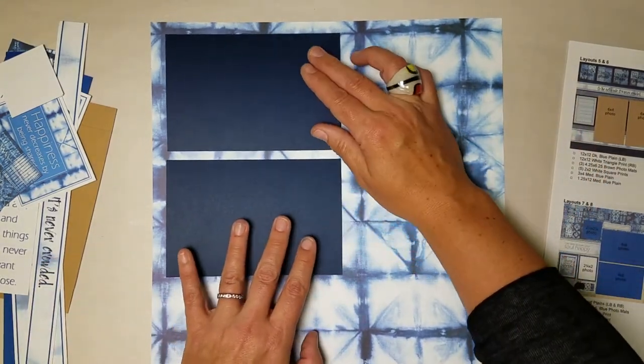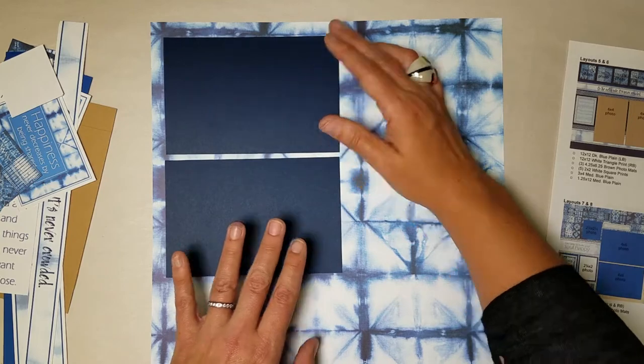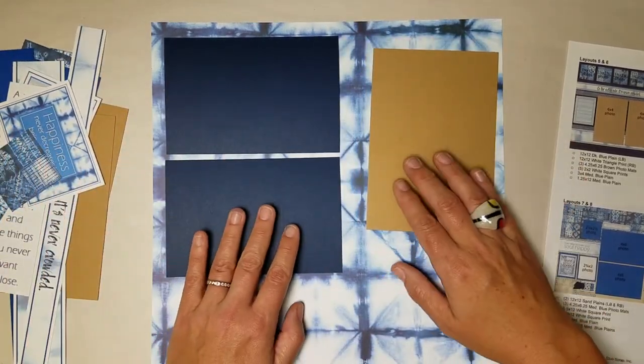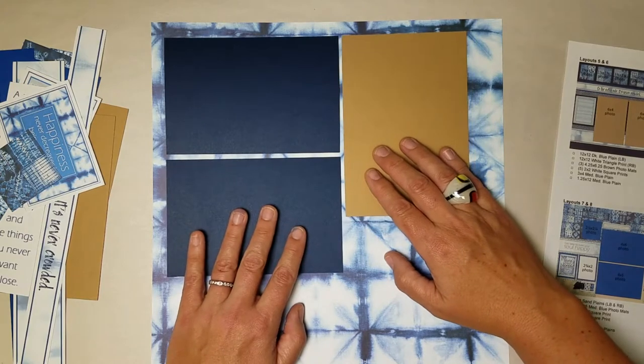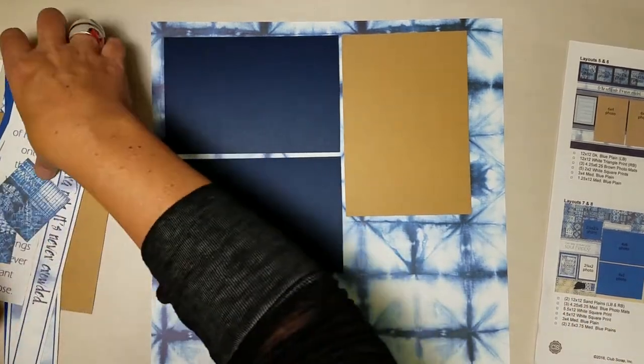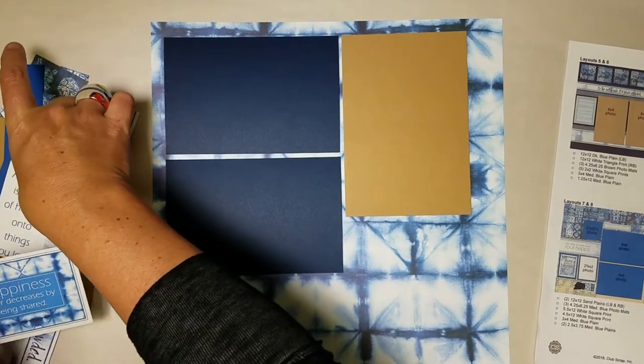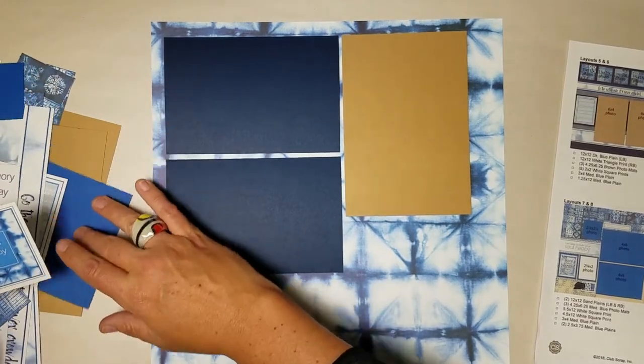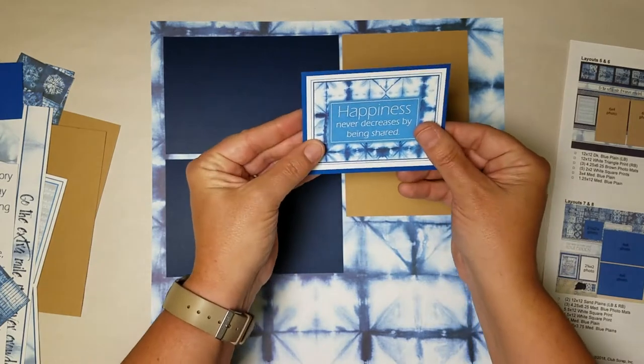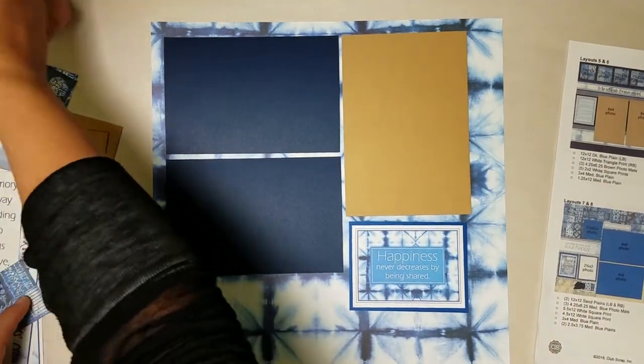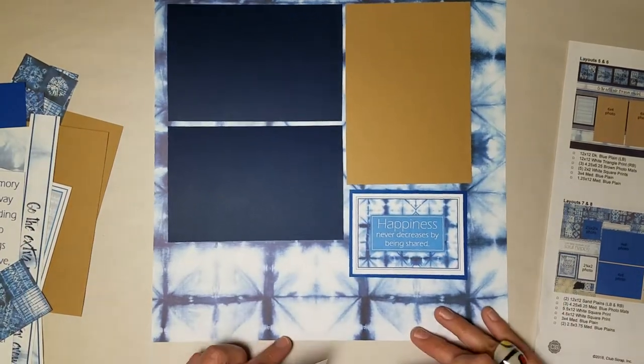And then a vertical tan or brown photo mat here. Beneath that I have a nested pair. So that's the happiness never decreases by being shared. Should have a mate. And it does. And nests perfectly. And then down beneath here I have two white squares. That should fit nicely there. I chose not to have them this side up. However, if you want to, that's absolutely your prerogative.